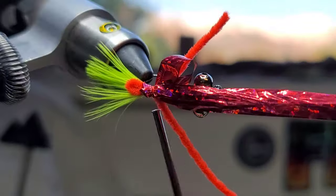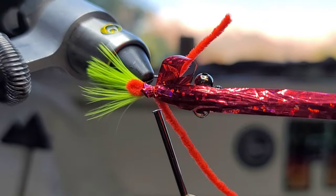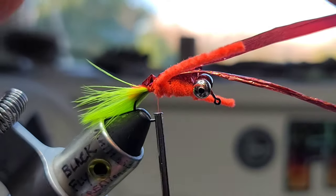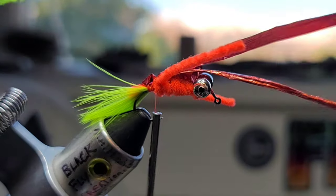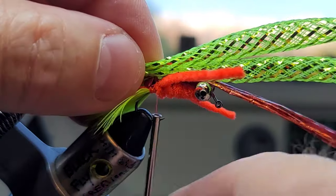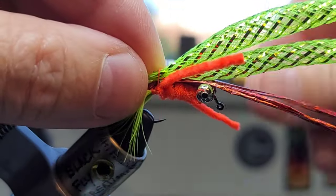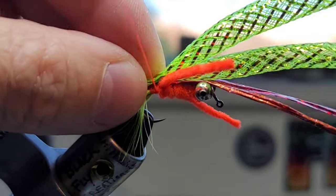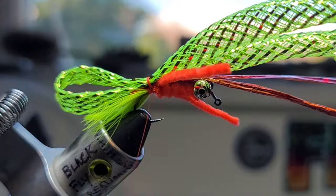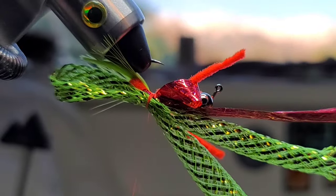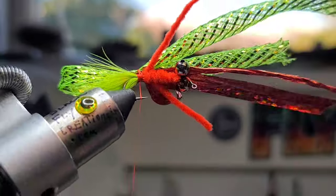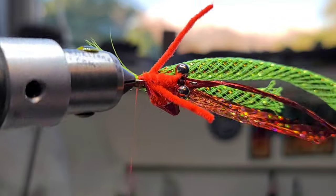Get a couple wraps in there to hold this baby. It looks terrible now guys, but wait till you see this thing finished, it's going to be crazy. So it should look something like that, we're getting there. Next we're going to take this diamond braid, you want to make sure you fold it too.